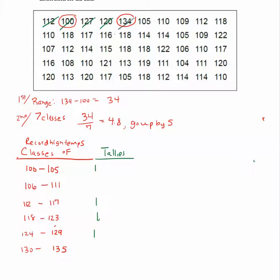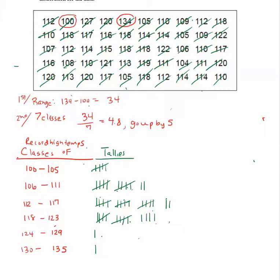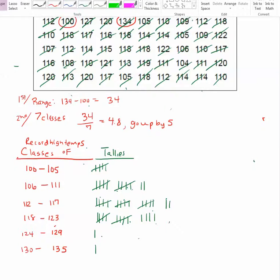134 is in the last class. 105 right here. 110 right here. So keep doing your tallies and then what you want to do is you want to add up those tally marks. I have got all of the tally marks for all of the data placing it in each class.